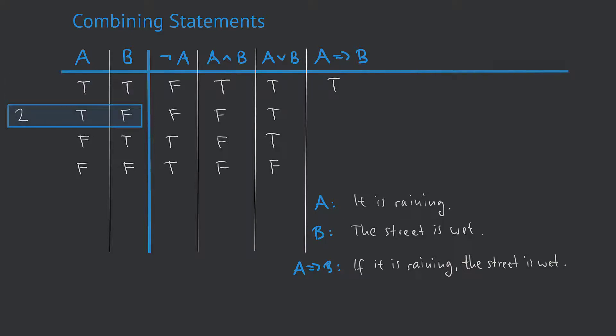In the second line, A is true and B is false — meaning it is raining, but the street is not wet. Such a situation apparently contradicts our idea of implication. The implication says whenever it is raining, the street is wet. But if we see that it is raining and the street is not wet, like here in the second line, the implication cannot be true. That means we have to put an F, meaning false.